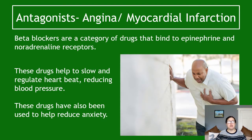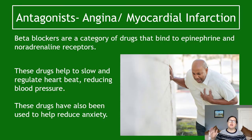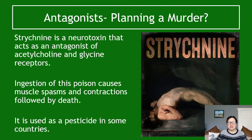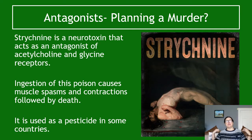An example of where antagonists are useful is beta blockers, which bind to epinephrine and noradrenaline receptors and block them. This helps slow and regulate heartbeats, reduce blood pressure, and has also been used to reduce anxiety due to the interaction between epinephrine, noradrenaline, and cortisol. Another example is strychnine, an extremely potent neurotoxin that acts as an antagonist of acetylcholine and glycine receptors. If ingested or even touched, it causes muscle spasms and contractions followed by death, and is used as a pesticide in some countries.